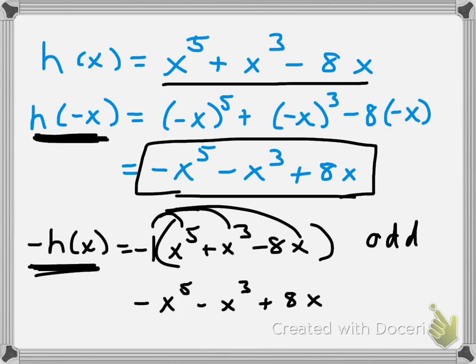And that is our criteria. Whenever you test for even, odd, or neither: put in opposite of x, evaluate and simplify, then compare. If the result is the same as the original, it's even. If it's the opposite of the original, it's odd. If it's neither of those, then it's neither.